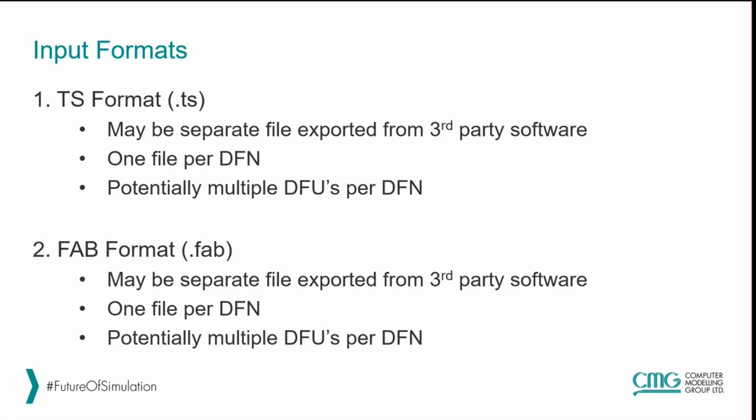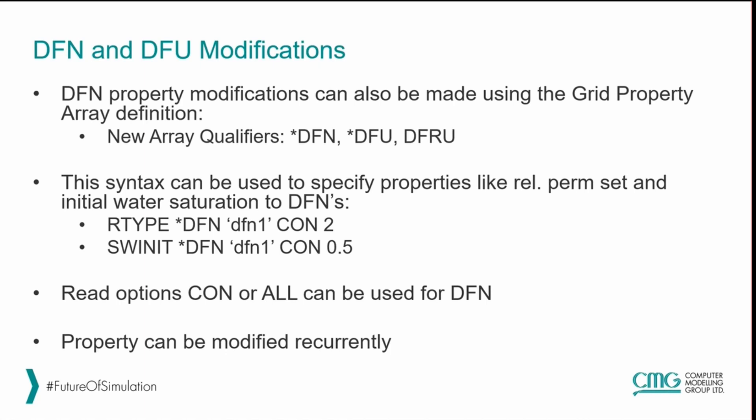There are also multiple file formats for importing, including the TS format and the FAB file format. Each file will contain one set of DFN networks but potentially multiple DFUs or fractures per DFN. The primary properties associated with imported fractures are permeability, aperture, and compressibility. However, we can also modify other properties — for example, defining different relative permeability sets per fracture or network, or initializing fractures with different properties. We can apply the same property to all fractures in the network, or use an array of properties to define different values per fracture, and these properties can also be modified recurrently.